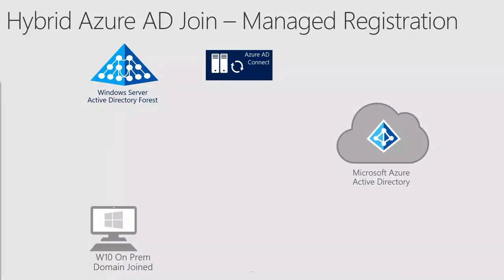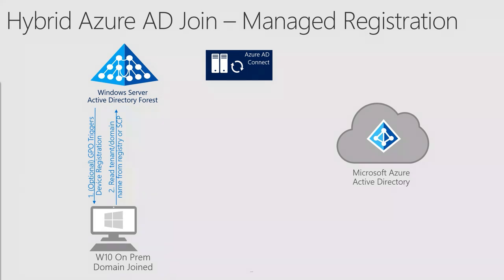Let's walk through the managed registration flow for Hybrid Azure AD join. Hybrid Azure AD join triggers when a group policy object is either non-configured or configured to have enabled automatic device registration. However, SCP should have been already configured at this point. The computer then reads the service connection point from Azure Active Directory to identify which tenant the device should be registered into.